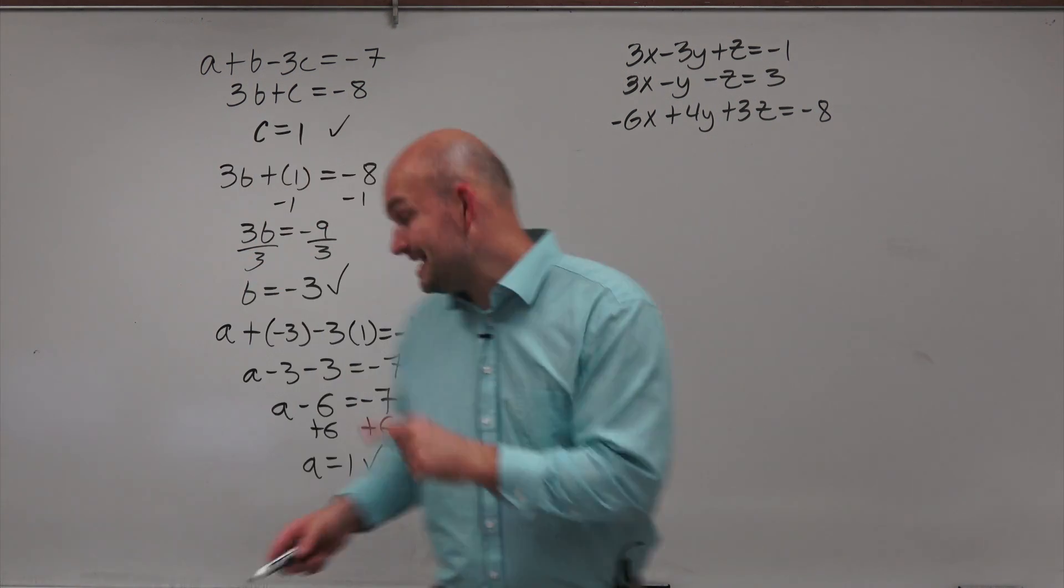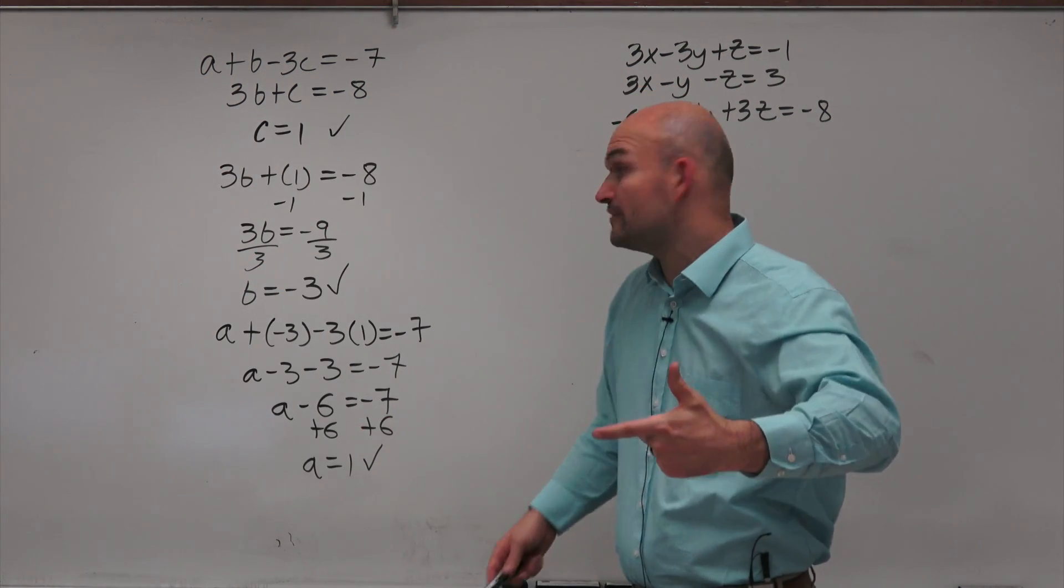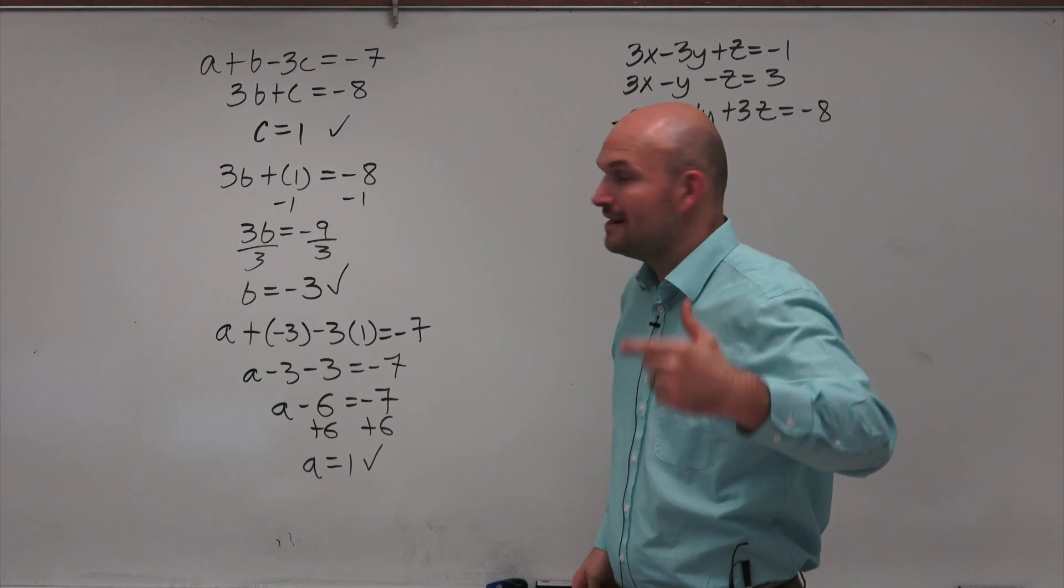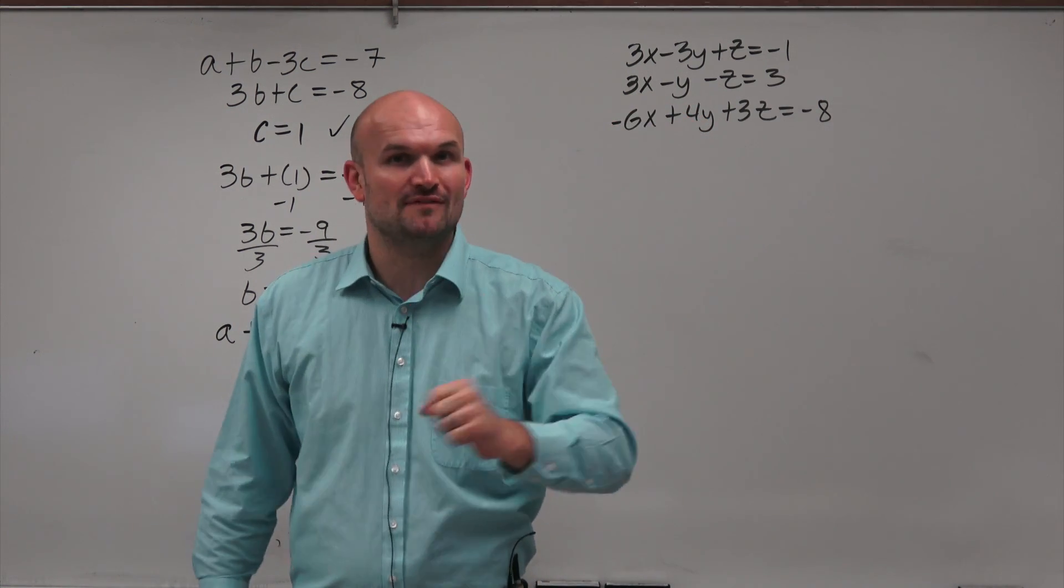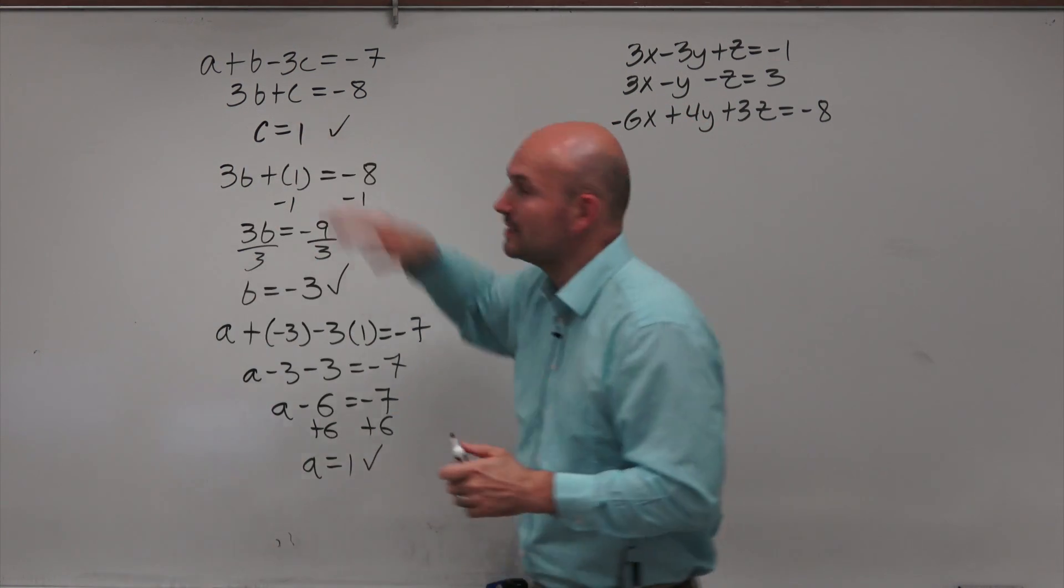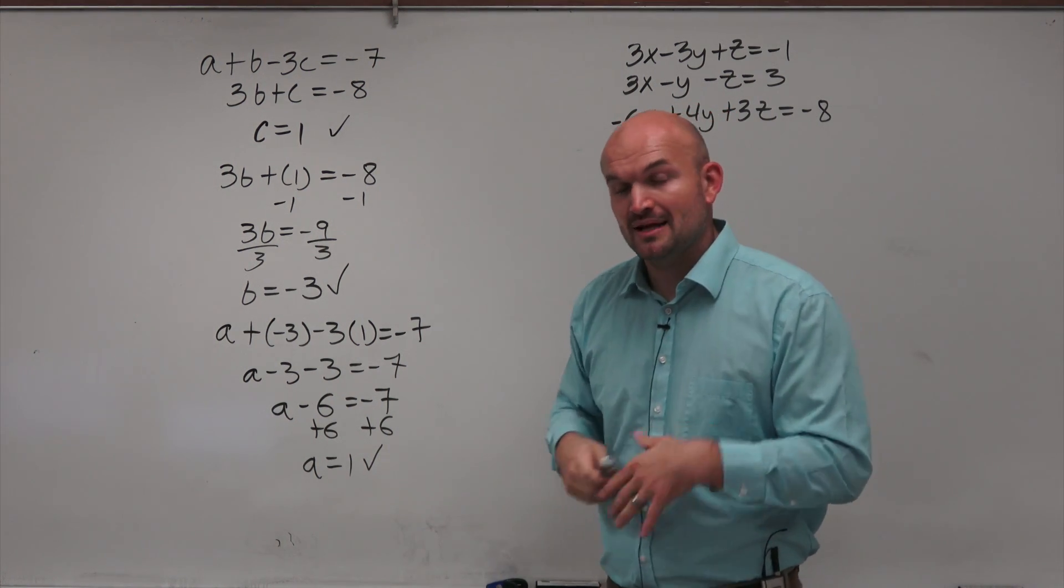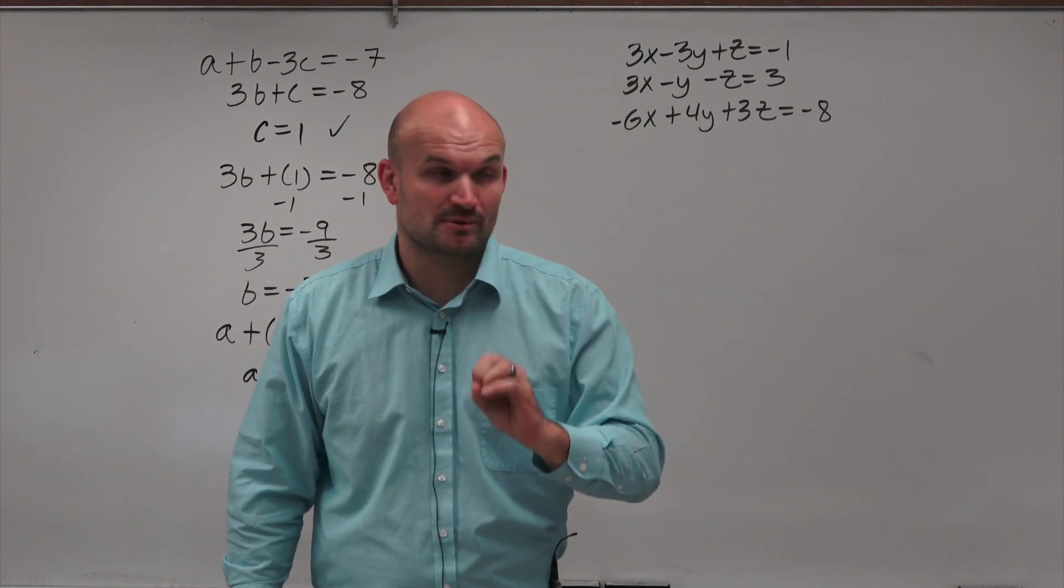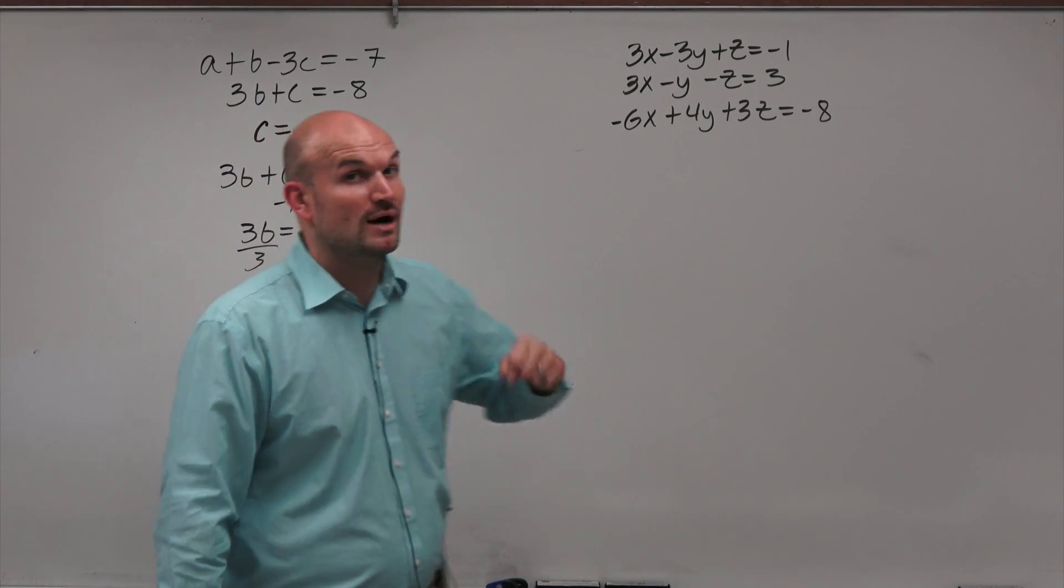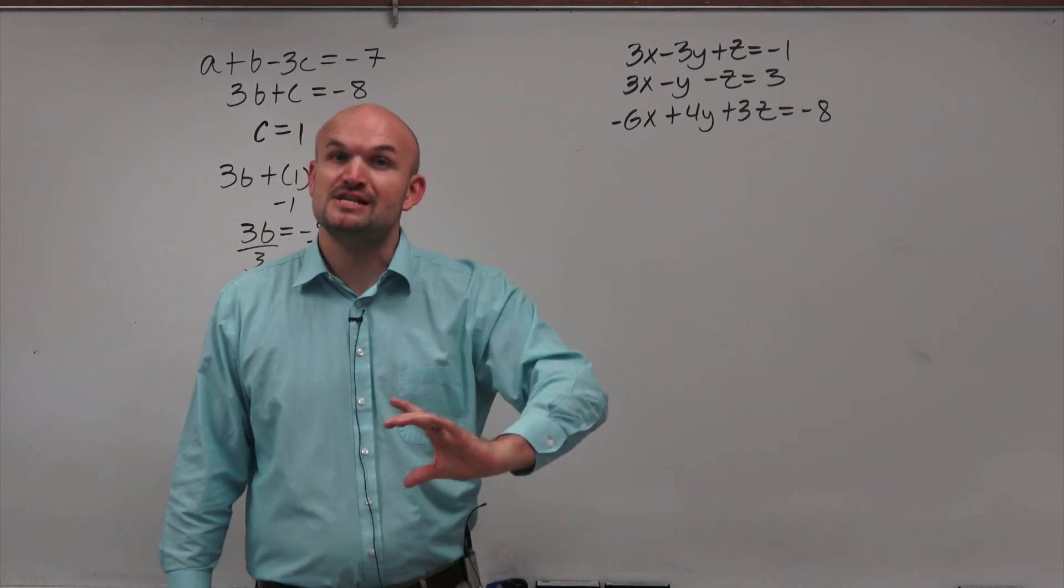So now, we know that when a is equal to 1, b is equal to negative 3, and c is equal to 1, that this system is solved. That is going to be the values that make each and every one of these equations true. We just did it one variable at a time. Now, sometimes, we're going to do things one variable at a time. Other times, we're going to do them at one equation, or one set of equations at a time.